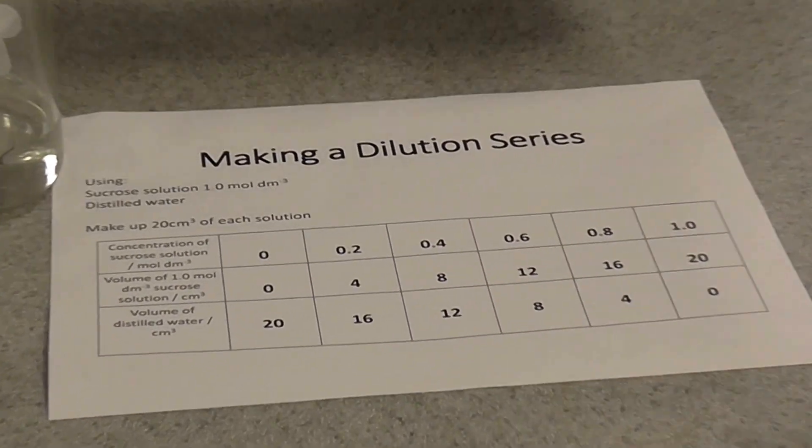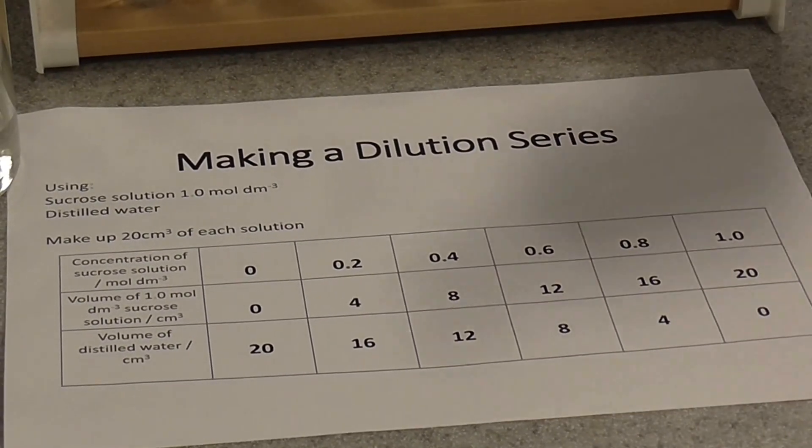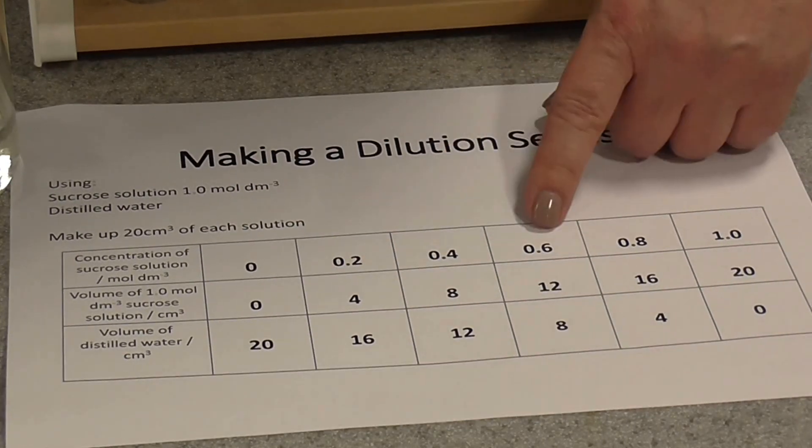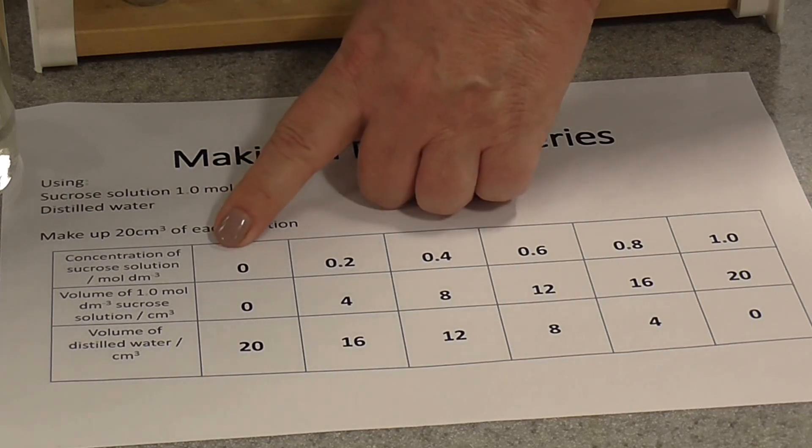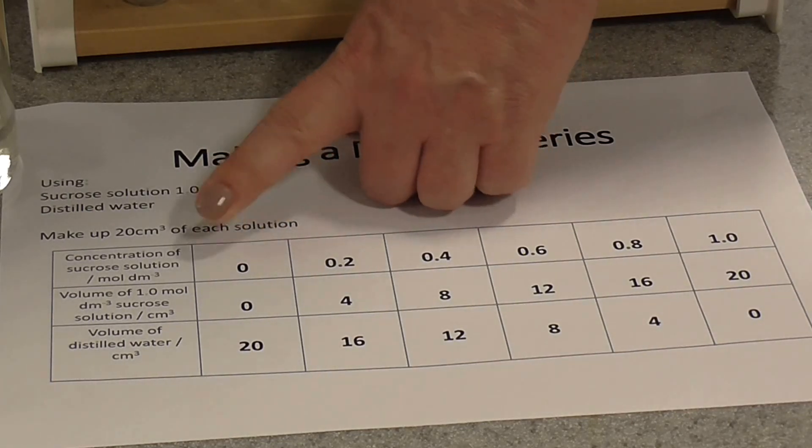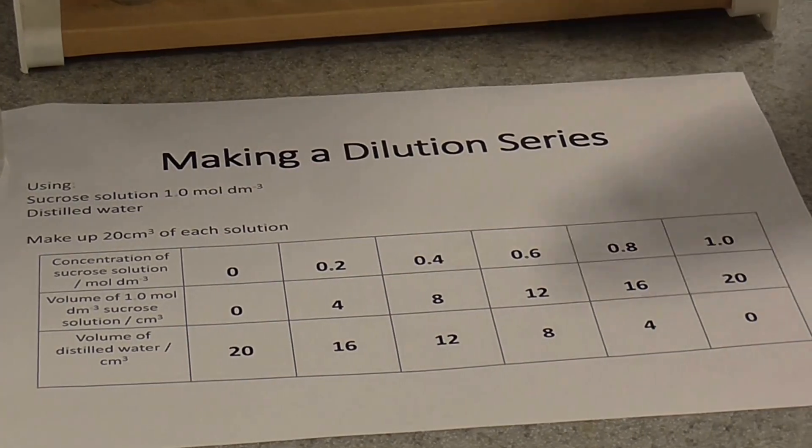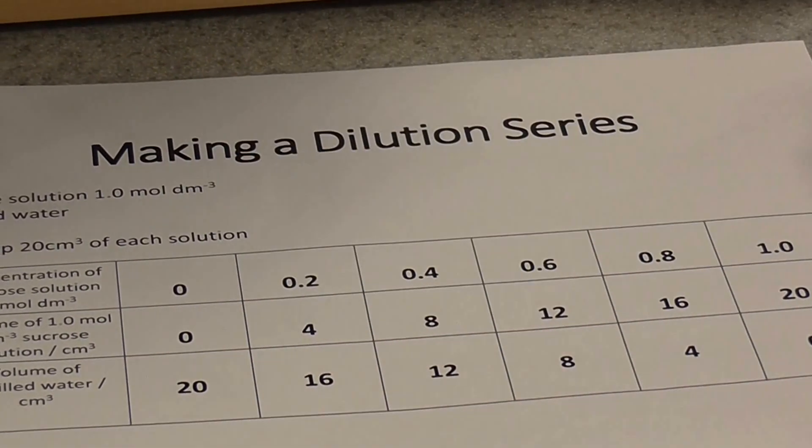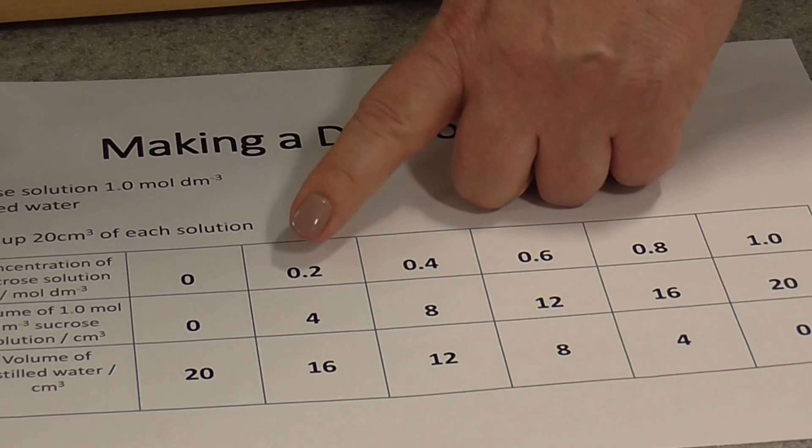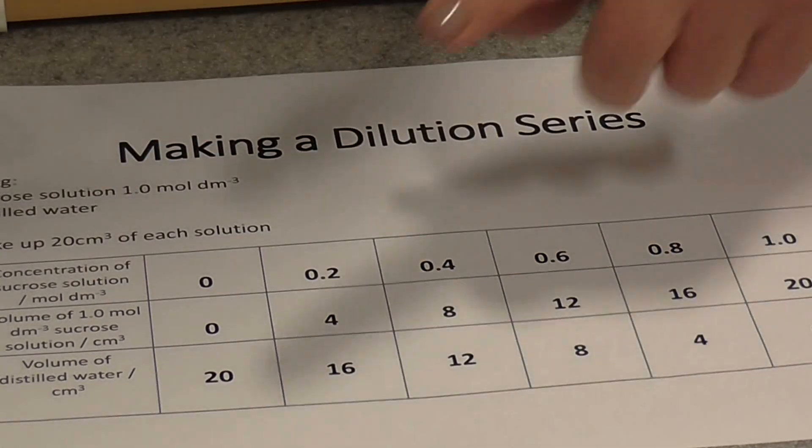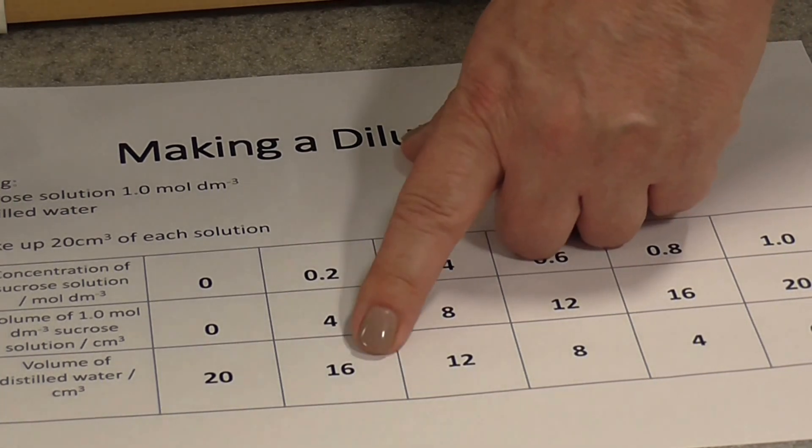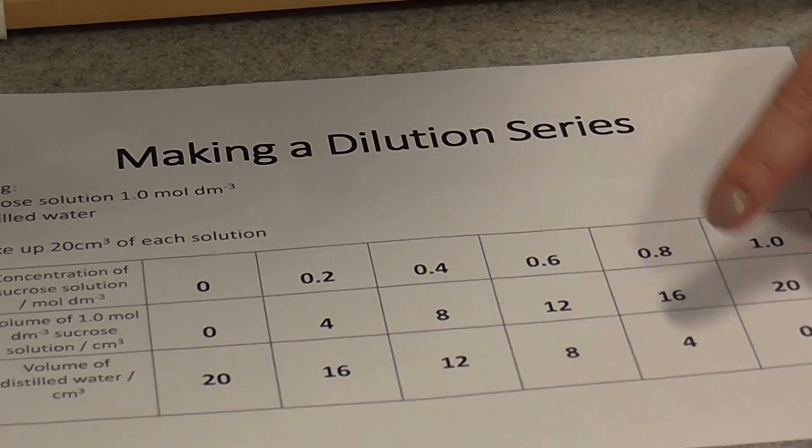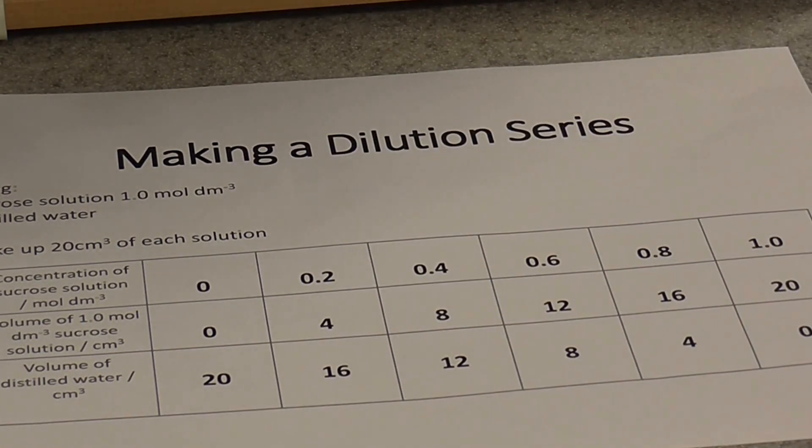First of all you'll need to label your test tubes. You see I've already made my dilutions here. These are the different concentrations of sucrose solution that we're going to prepare. To make 20 centimetres cubed up, the zero moles per decimetre cubed concentration of sucrose is just going to be water, so we need 20 centimetres cubed of water with no sucrose solution. Our 0.2 mole per decimetre cubed solution will need 4 centimetres cubed of the 1 molar sucrose solution and 16 centimetres cubed of water and so on. This table shows you how to prepare the rest of your dilution series.